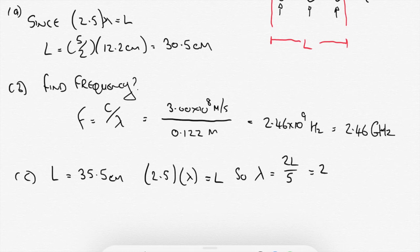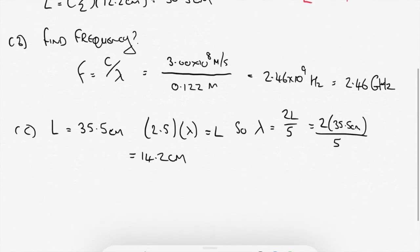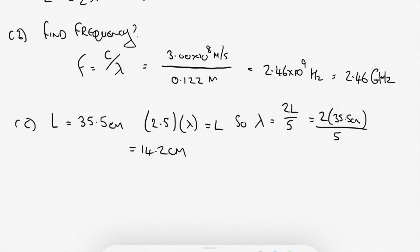So that tells us lambda now is going to be equal to 2L over 5. And that's going to be equal to twice our new L. So that's 35.5 centimeters divided by 5, which is what we had already. And that's equal to 14.2 centimeters. So we need to change the wavelength of our microwave radiation. If we had mismanufactured our microwave and it was 5 centimeters bigger than it should be, we'd have to change the wavelength of the radiation to 14.2 centimeters in order to have our 5 antinodes still in there.